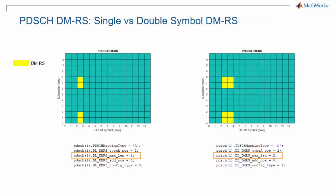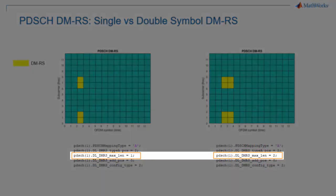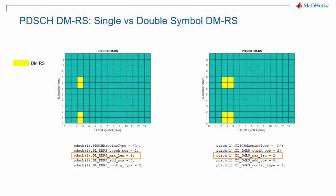Another degree of flexibility in allocating DMRS is whether to allocate single symbols or double symbols. When allocating double symbols, DMRS are present in two consecutive symbols, thereby doubling the number of DMRS. Whether single or double symbol allocation is used is a higher layer parameter represented by DL-DMRS-MaxLength in 5G toolbox. The picture on the left has this parameter set to 1 or single symbol, while the picture on the right has it set to 2 or double symbols.